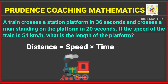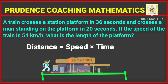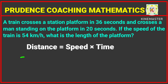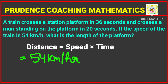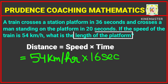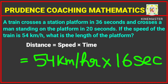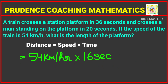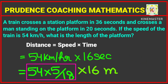We multiply 54 kilometers per hour by the time taken to cross the platform, that is 16 seconds. Since all the answer options are in meters and the speed is in kilometers per hour, we need to convert 54 kilometers per hour into meters per second.